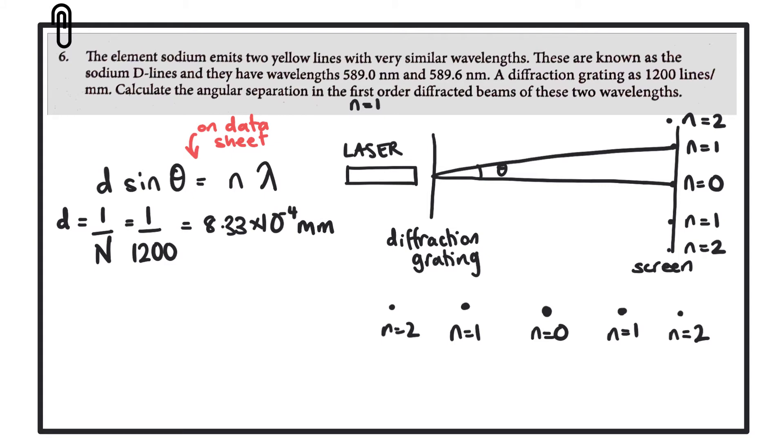However, we need this to be in meters for the equation. So really what we've got is 8.33 by 10 to the minus 4 by 10 to the minus 3, so we can bring all those terms together, or those indices together, and we get to the minus 7 meters.